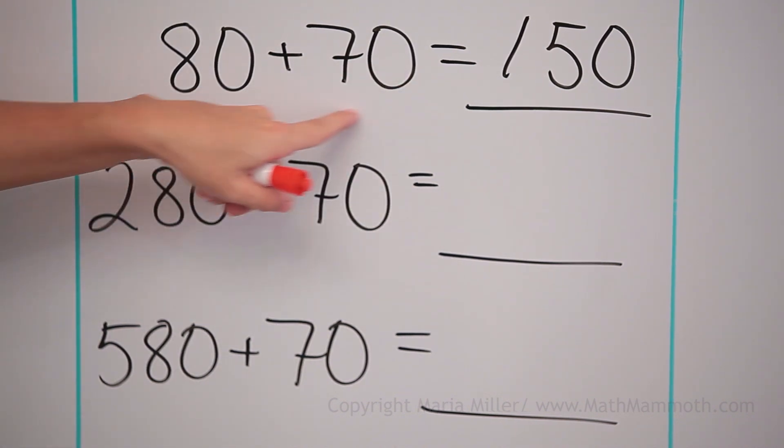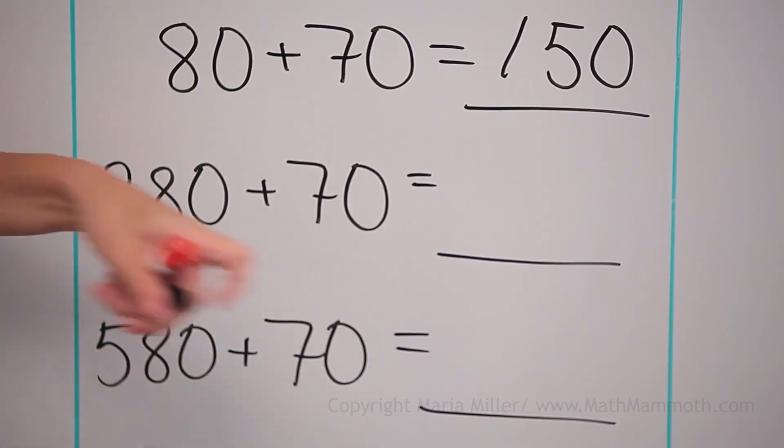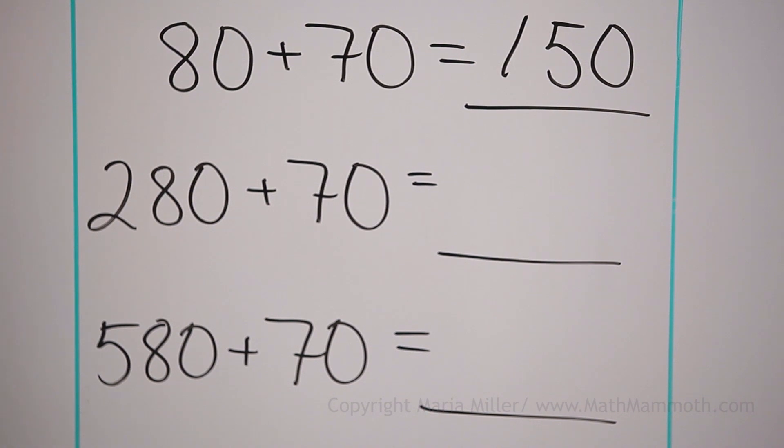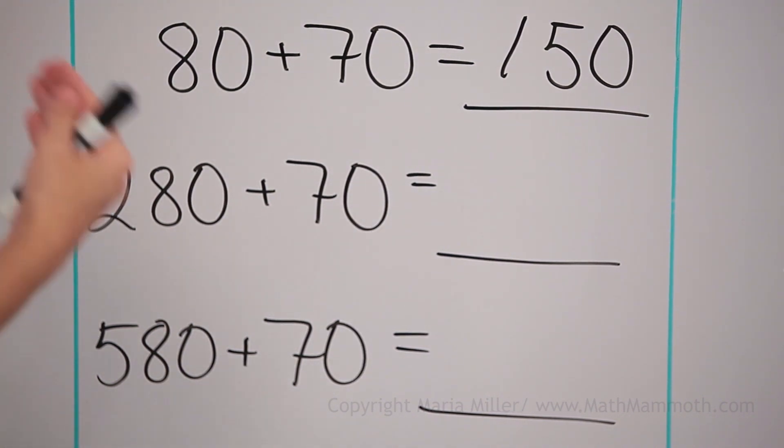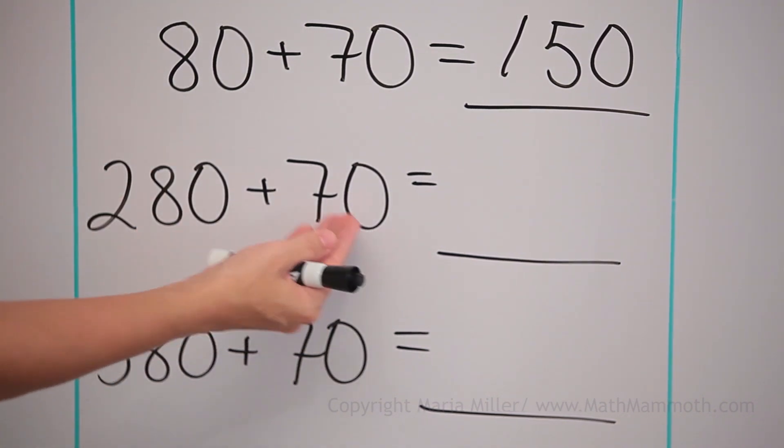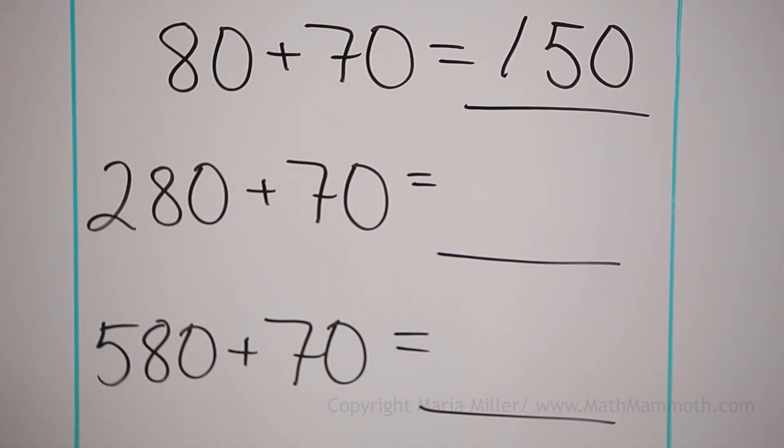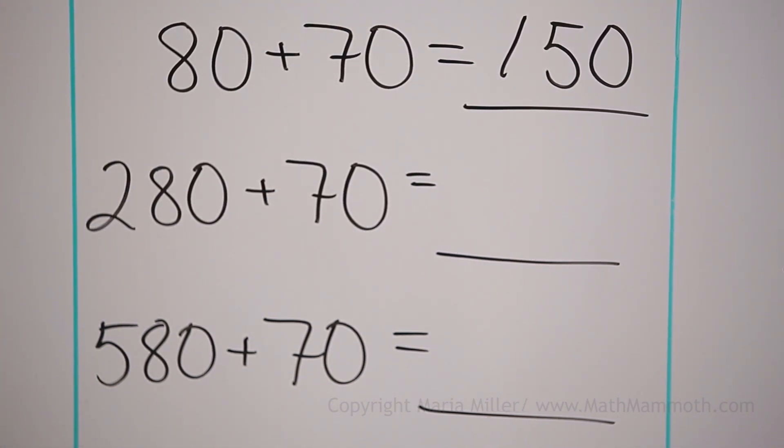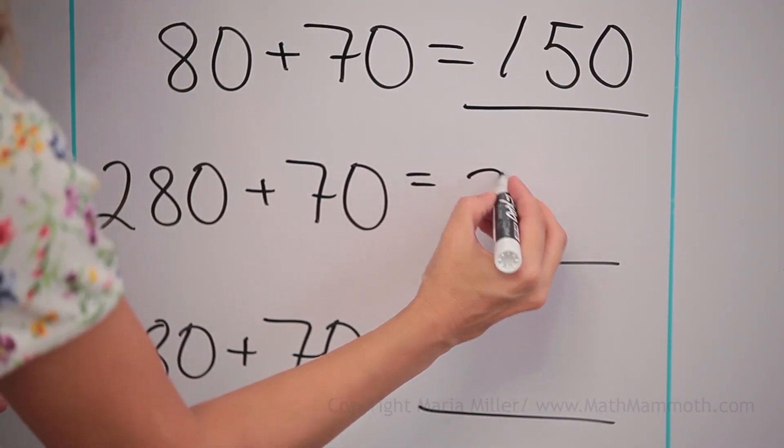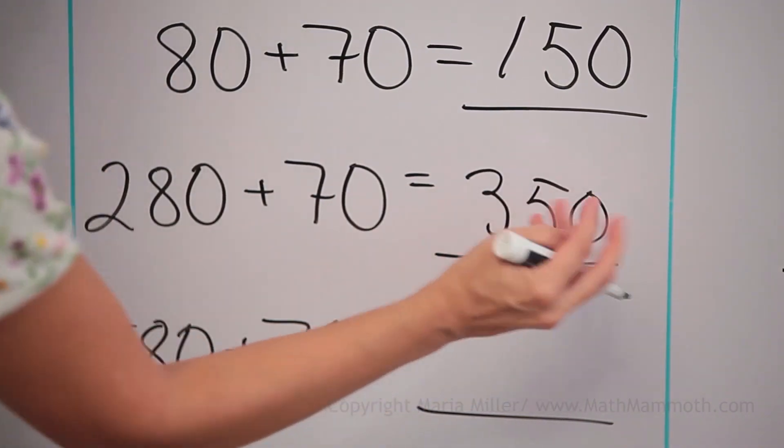Now we can use this result to solve this one. Two hundred eighty plus seventy. These tens, the eighty and seventy make more than one hundred. So we will get three hundred something. It will go over to the next hundred, and it will go fifty over the next hundred, just like this one did.